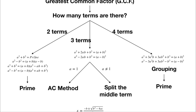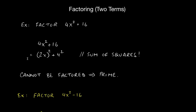Remember, prime means it cannot be factored further — just like the number 5, which can't be broken into two factors, unlike 6 which factors into 3 × 2. So 4x² + 16 is a prime expression because it is a sum of squares.